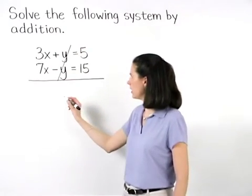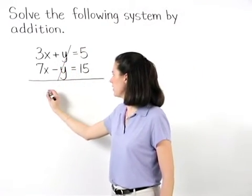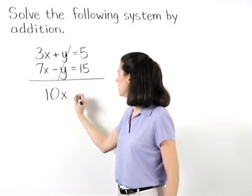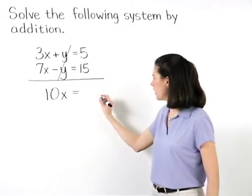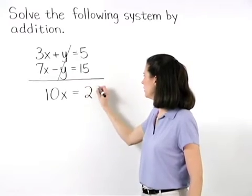And on the left side, 3x plus 7x is 10x, and on the right side, 5 plus 15 is 20.